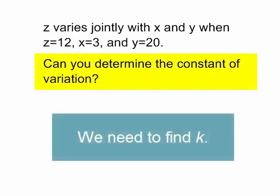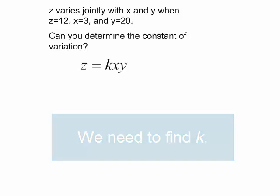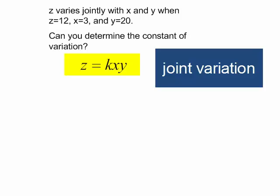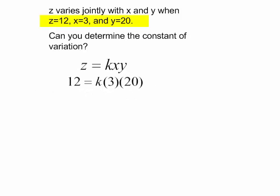We are looking for k. Let's begin with writing z equals k times x times y. And let's fill in the variables that we know. We know that z is equal to 12, x is 3, and y is 20.